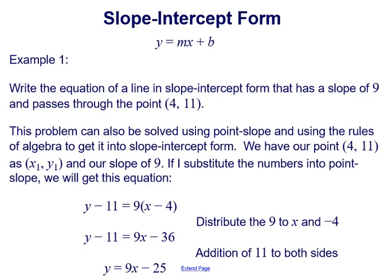This problem can also be solved using point-slope form and then using algebra to convert to slope-intercept form. With point (4, 11) as x1 and y1 and slope of 9, substituting into point-slope — y minus y1 equals m times (x minus x1) — gives us y minus 11 equals 9 times (x minus 4). Distributing the 9 gives 9x minus 36, and adding 11 to both sides gives y equals 9x minus 25, the same equation.